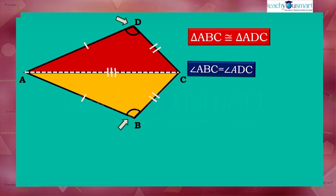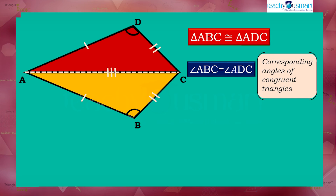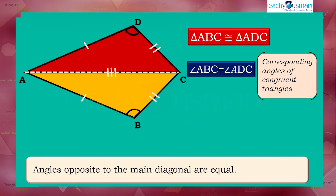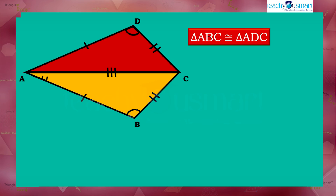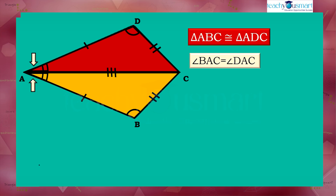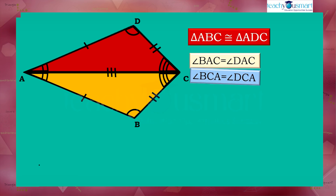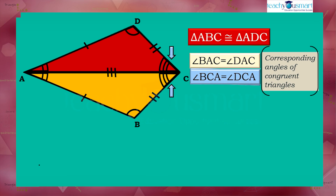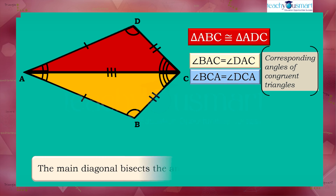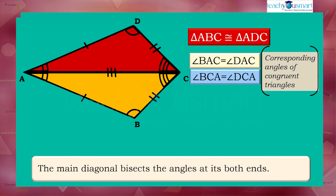Angle B and angle D are corresponding angles of these two congruent triangles — that is, angles opposite to the main diagonal are equal. Also, angle BAC and angle DAC are a pair of corresponding angles, so they are equal. And angle BCA and angle DCA are another pair of corresponding angles, they are also equal. That is, the main diagonal bisects the angles at both its ends.